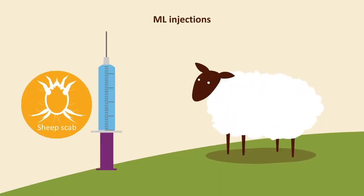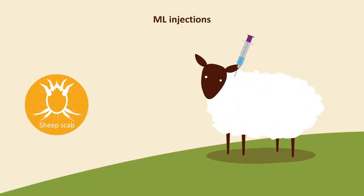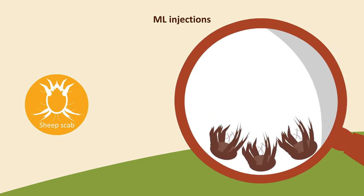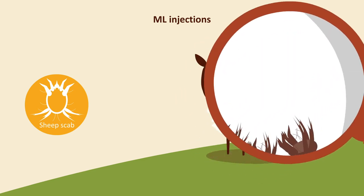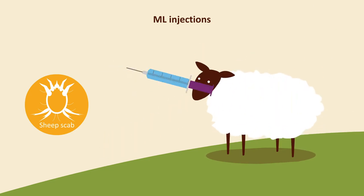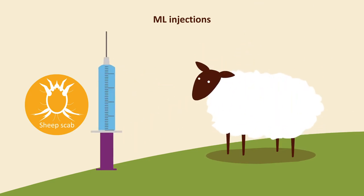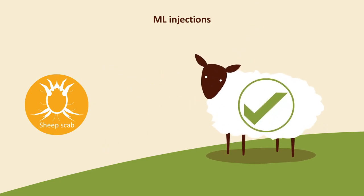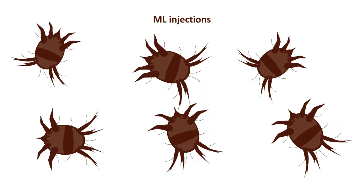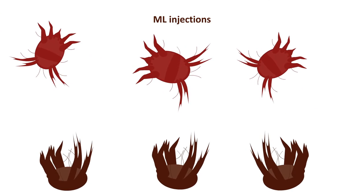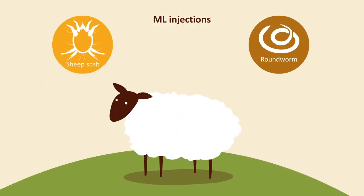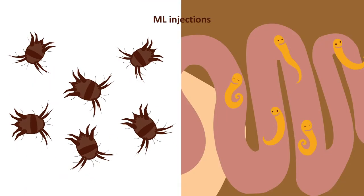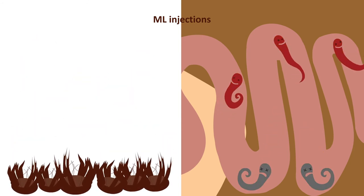ML injections will treat sheep scab. Depending on the active used, they can prevent reinfestation for a period of time. Products with a shorter persistency period will need two treatments to effectively remove the scab mites. Be aware that some scab mites have developed resistance to MLs. MLs are also used to treat roundworms in sheep, therefore the use of MLs for sheep scab can select for resistant roundworms.